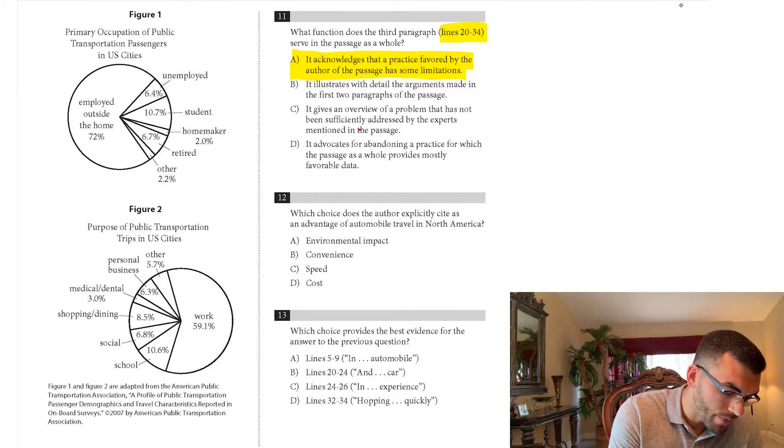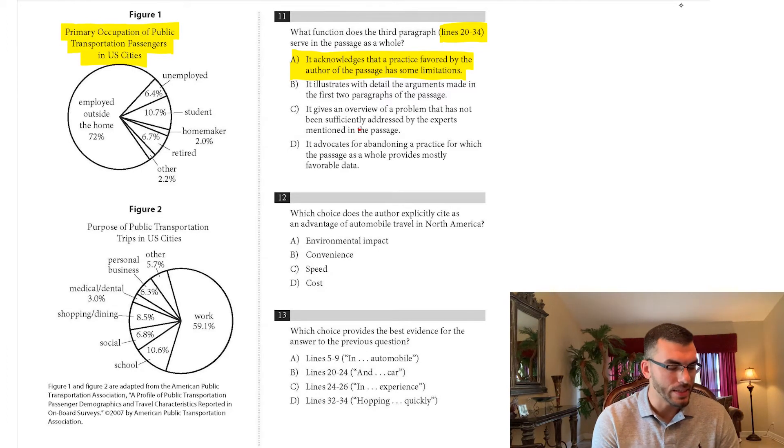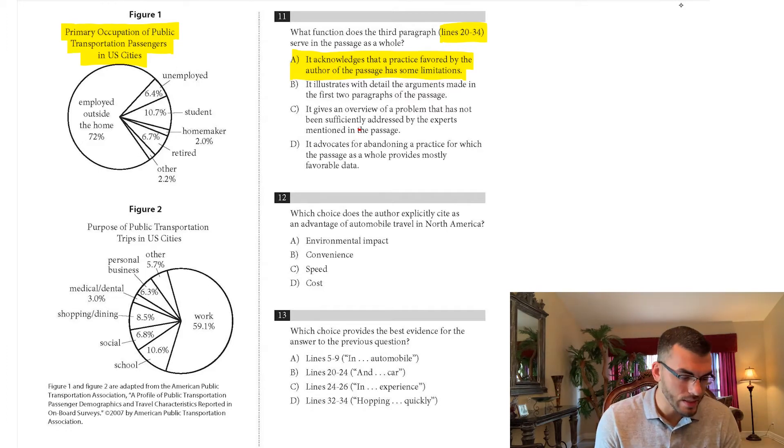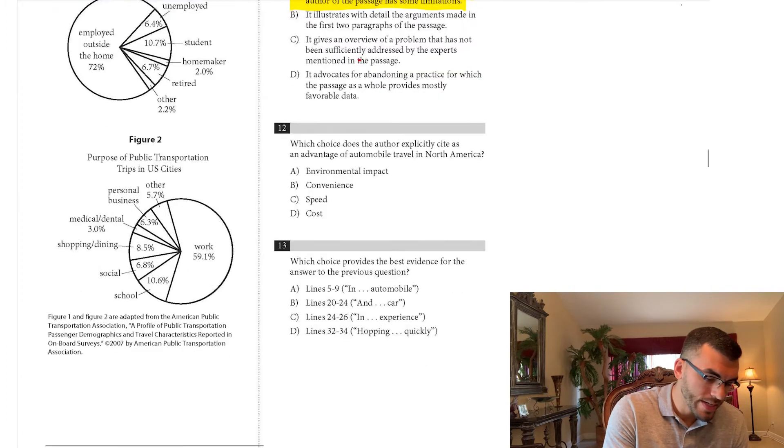So what's the first figure saying? The primary occupation of public transportation passengers in US cities. Basically of everybody that rides public transportation, what are their jobs? What's their primary job? You have people that are employed outside the home. You have students, you have people that are retired. You have homemakers, people that are unemployed. That's all this is saying. The main job that people have who ride the bus in US cities. That's it. Easy to understand.